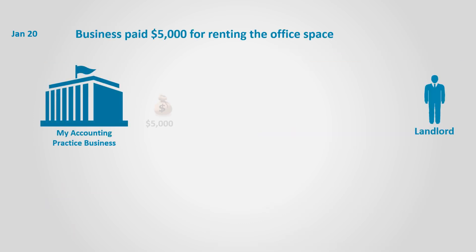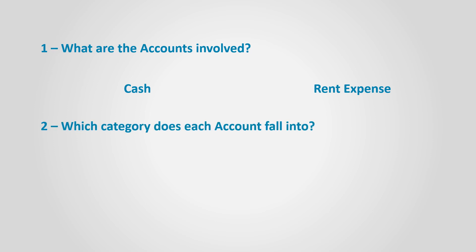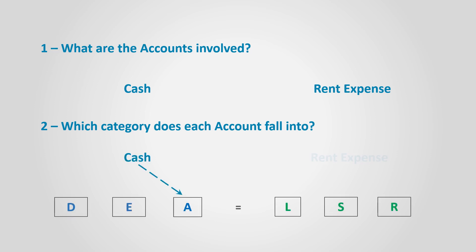On January 20th, the business paid $5,000 for renting office space. To analyze the transaction, we ask ourselves the usual five questions. What are the accounts involved? Since the business paid cash, the cash account is involved. It paid cash because it rented a place to generate revenue, so that is regarded as an expense, and the rent expense account is involved. Which category does each account fall into? Cash falls in the assets category and rent expense falls in the expenses category.